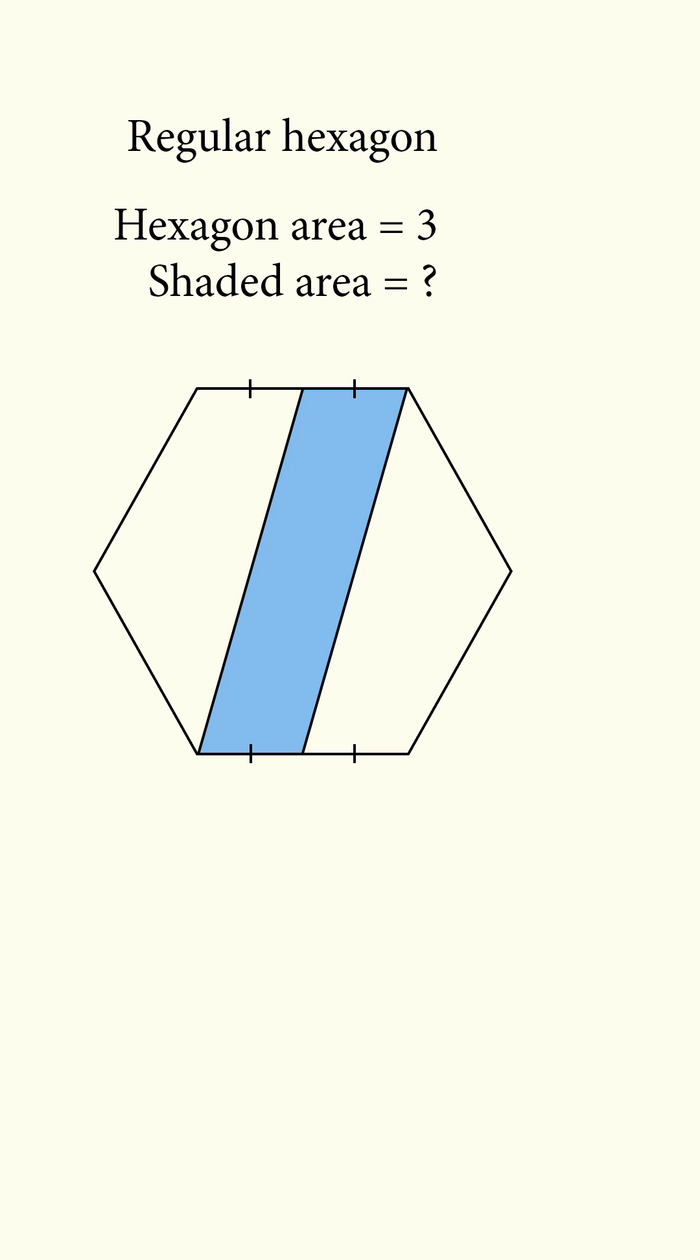We have a regular hexagon with area equal to 3, and we need to calculate the shaded area of the parallelogram, which is formed by a vertex and a midpoint of opposite sides.